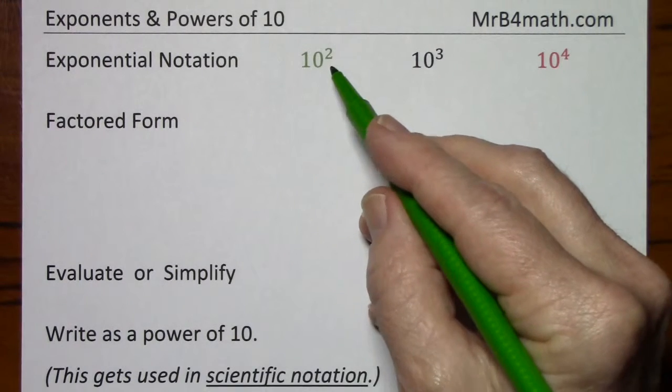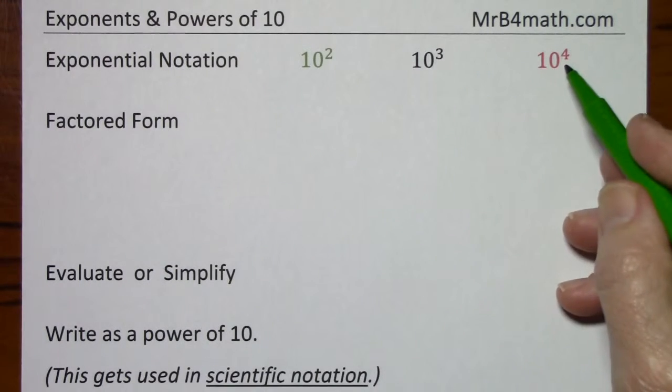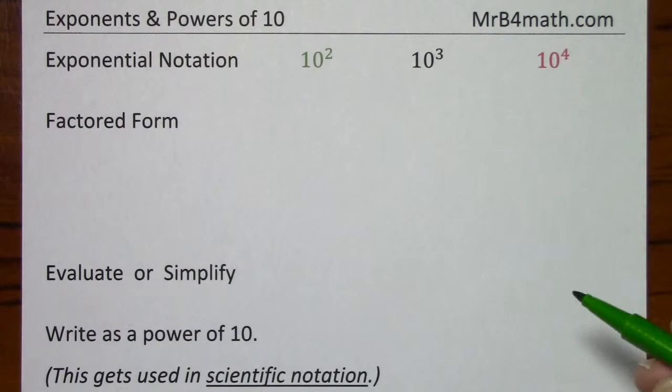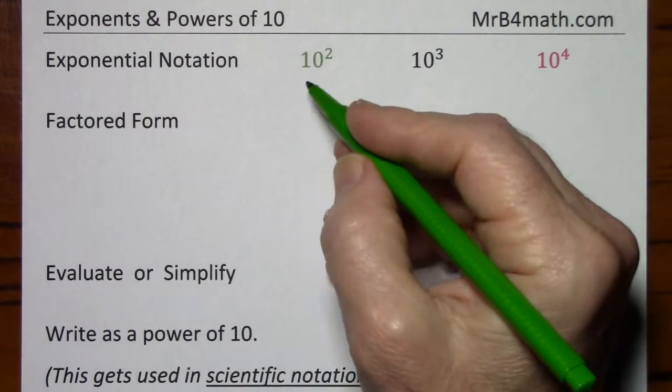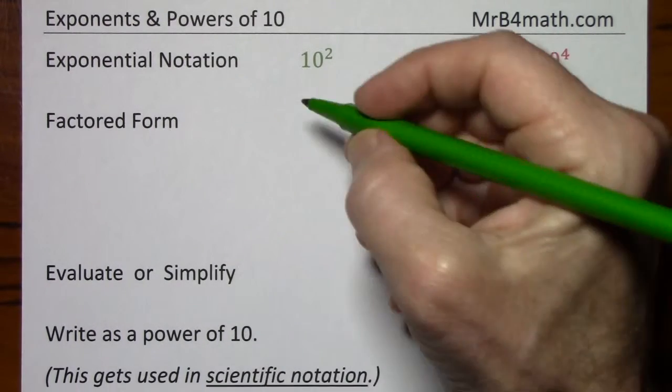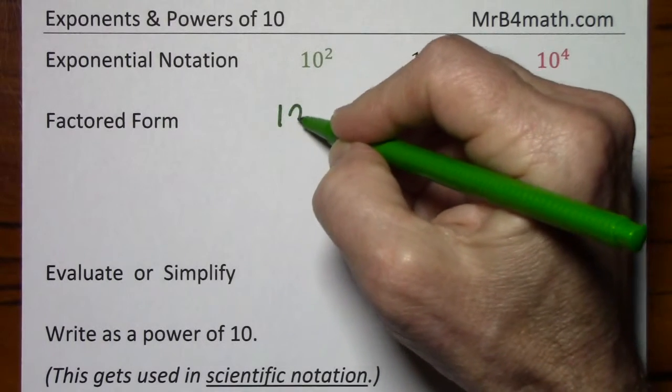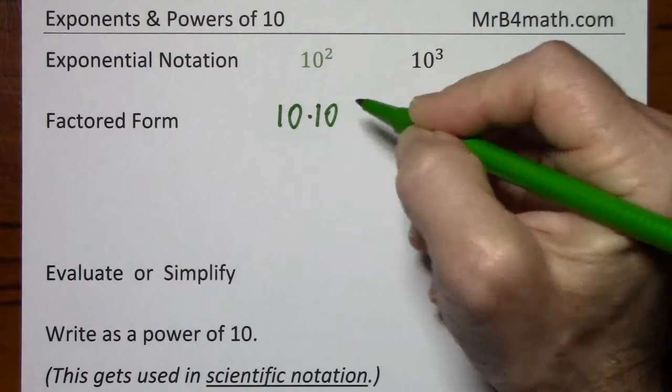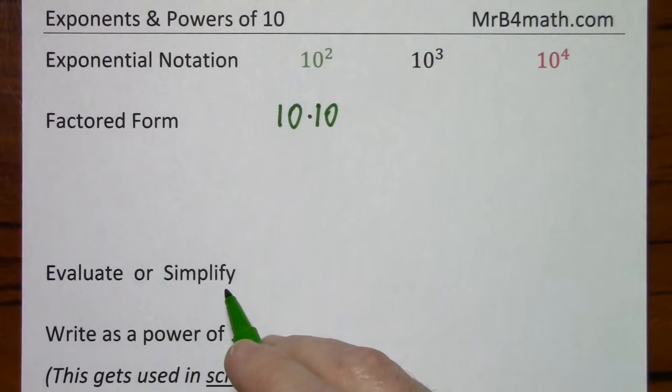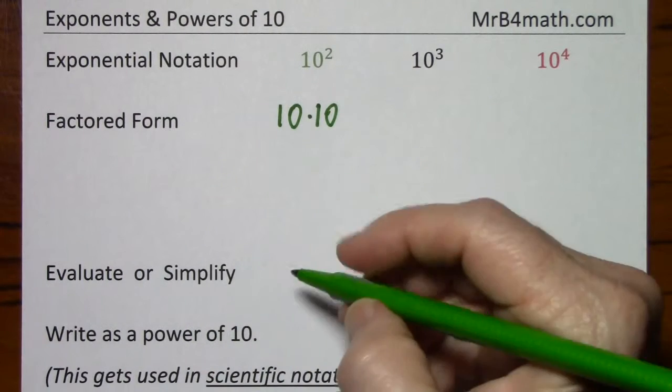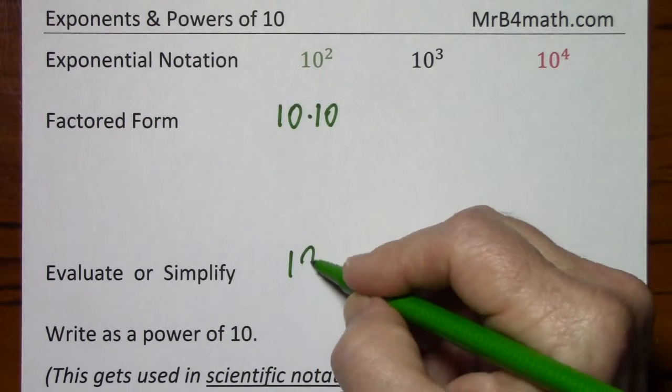Now with powers of 10, there's a pattern that's pretty easy to pick up on. And it gets used a lot in mathematics, definitely in scientific notation. So 10 to the 2nd in factored form, simply 10 times 10. If we evaluate or simplify this, we get 100.